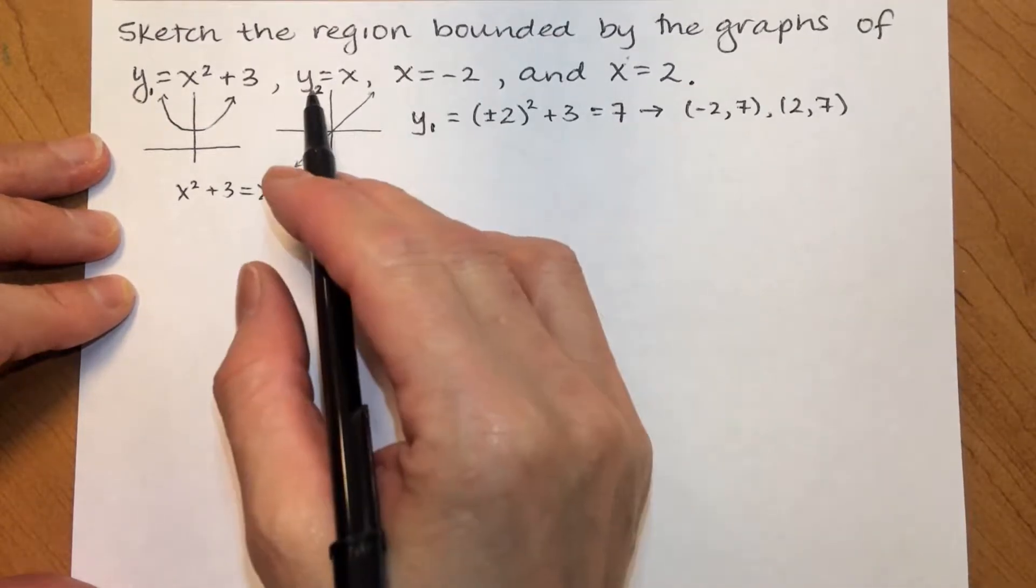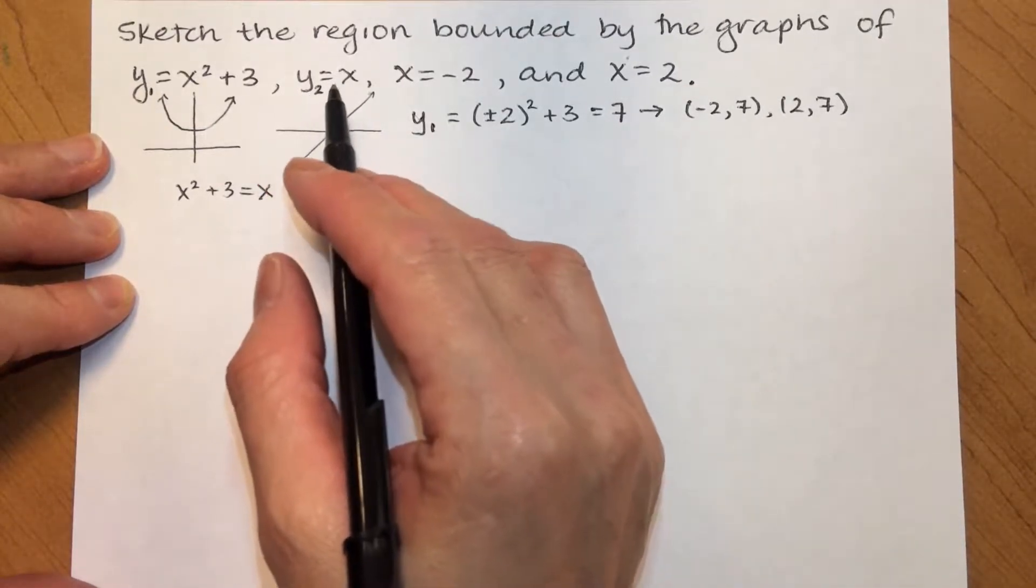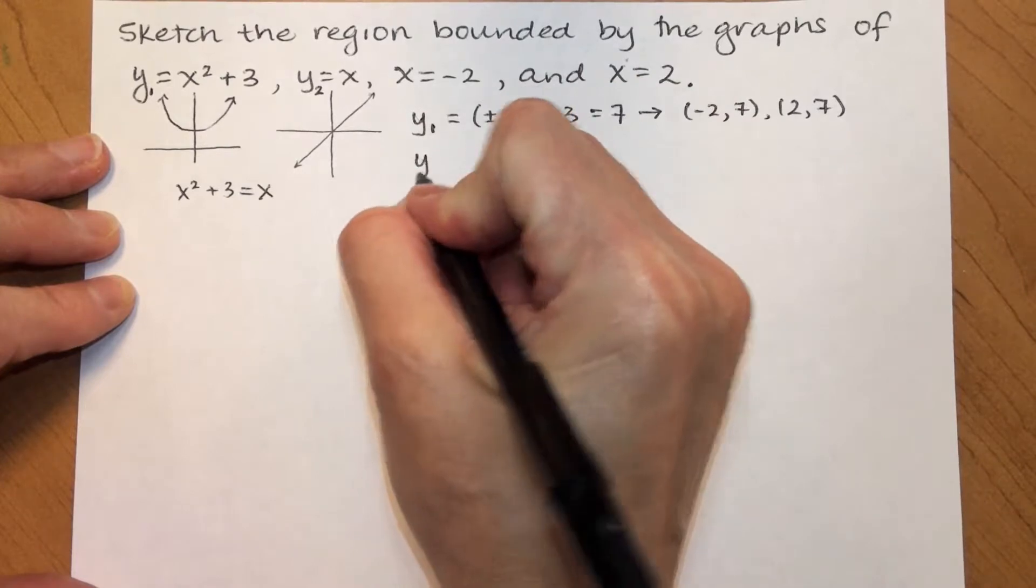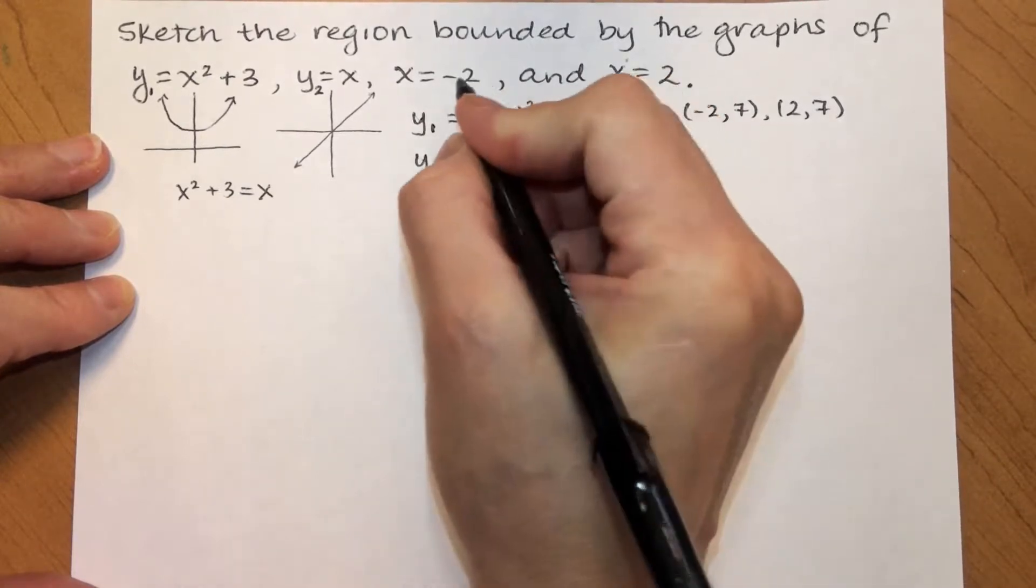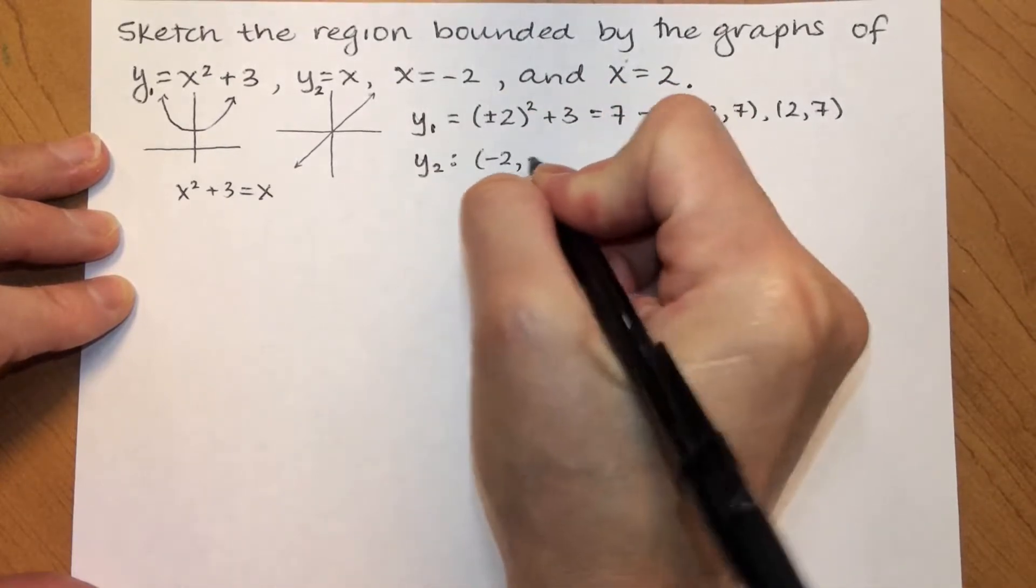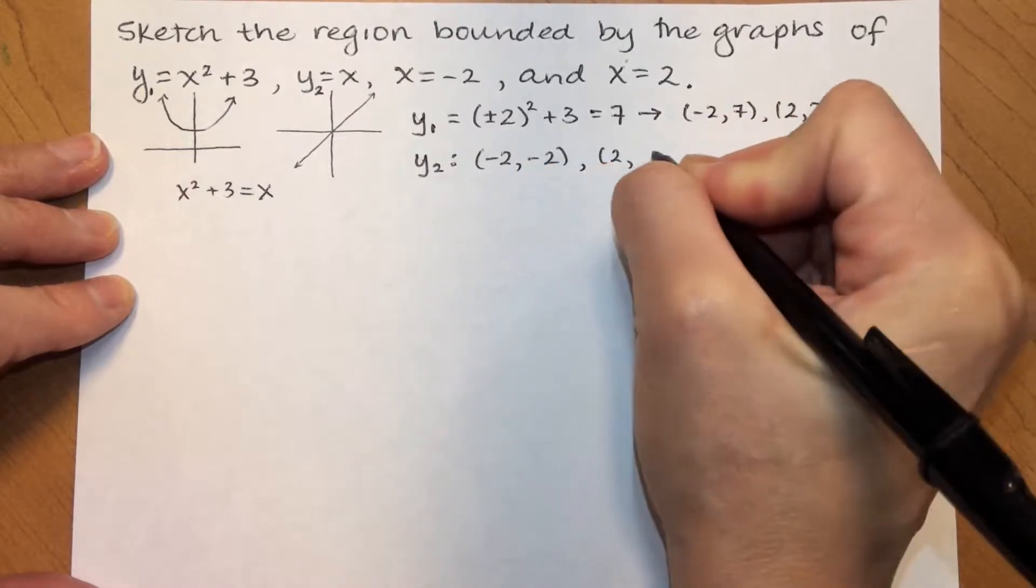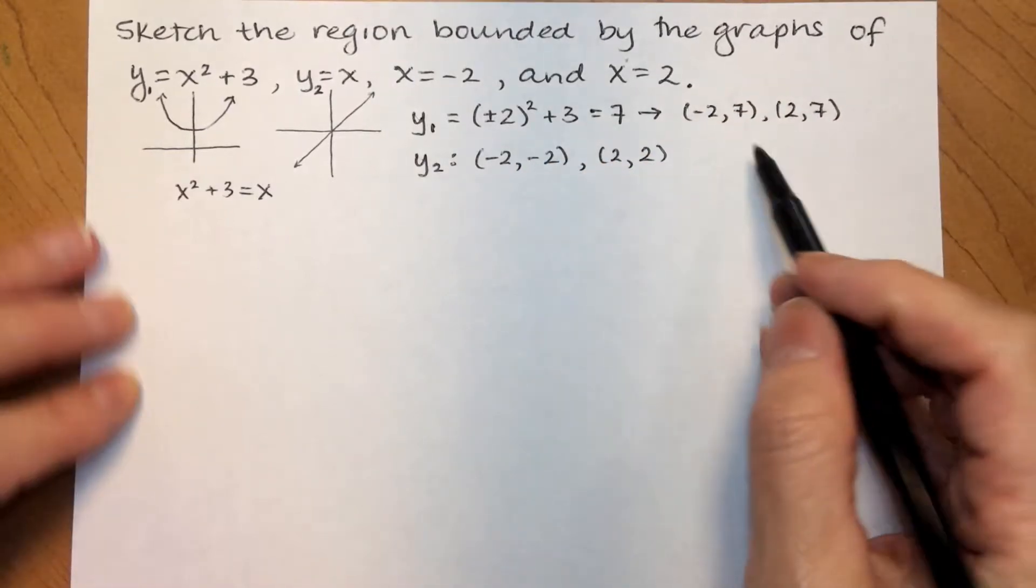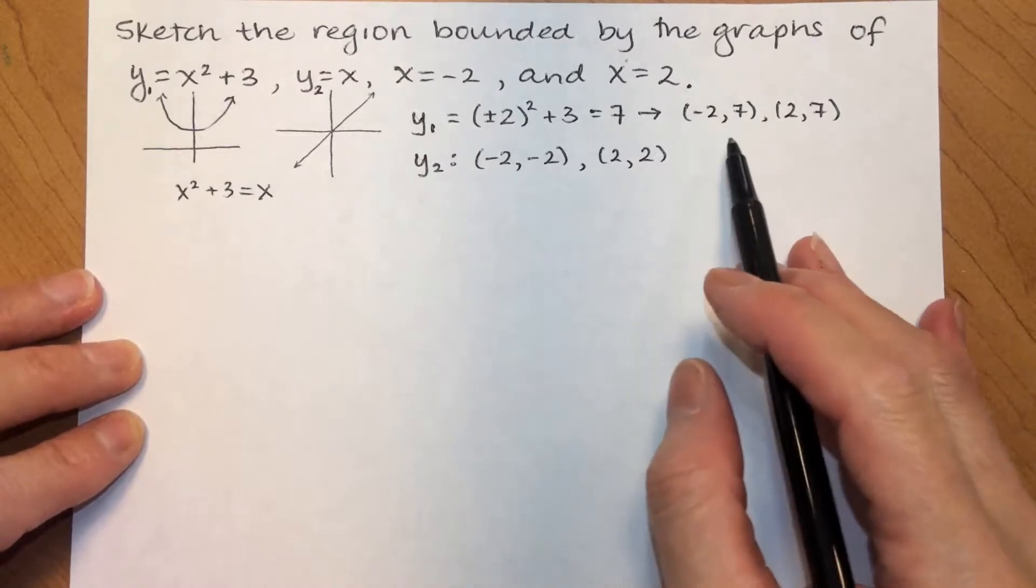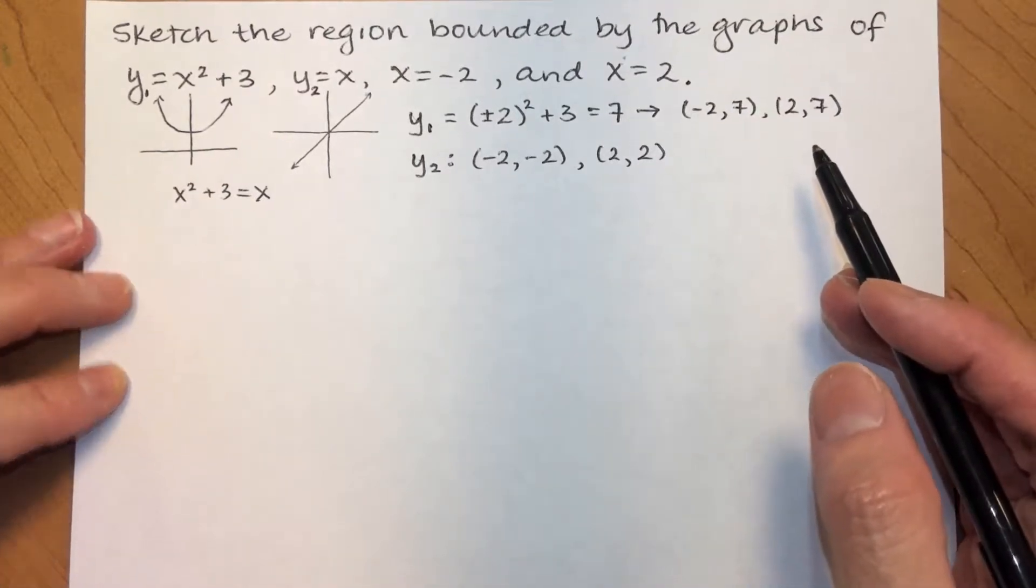On the line, well, y equals x. So, for the line, when x is negative 2, y is negative 2. When x is 2, y is 2. So, this gives me 4 points that's going to help me easily draw my graph.